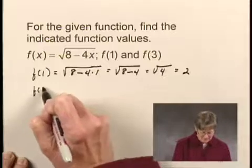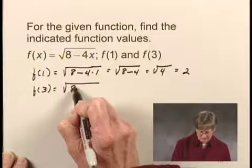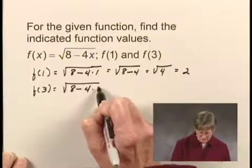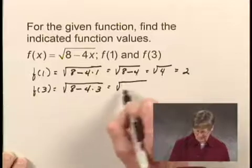Now let's look at f(3). We'll substitute 3 for x this time. So we have f(3) = √(8 - 4×3), which is √(8 - 12).